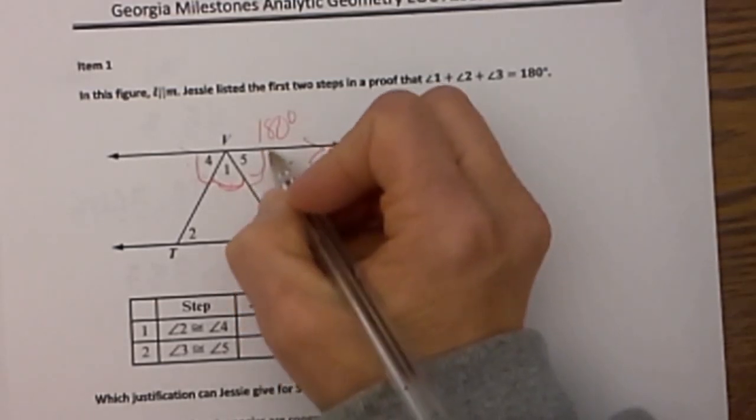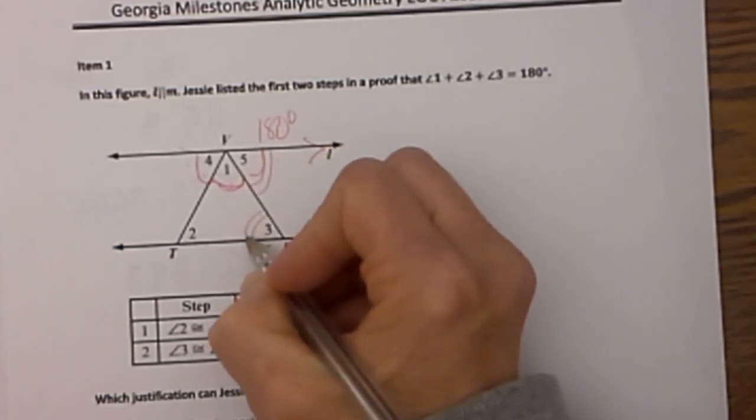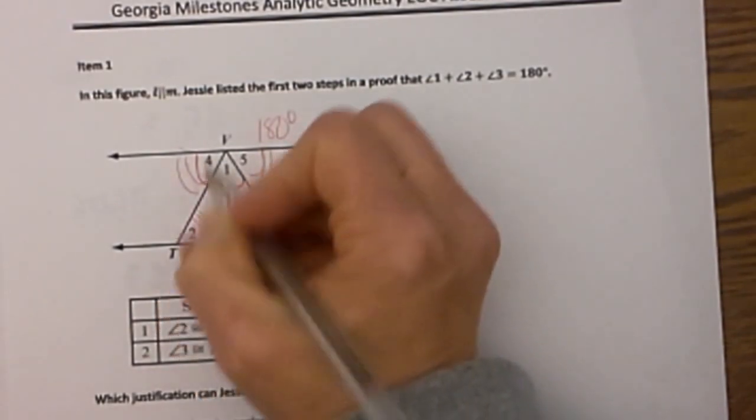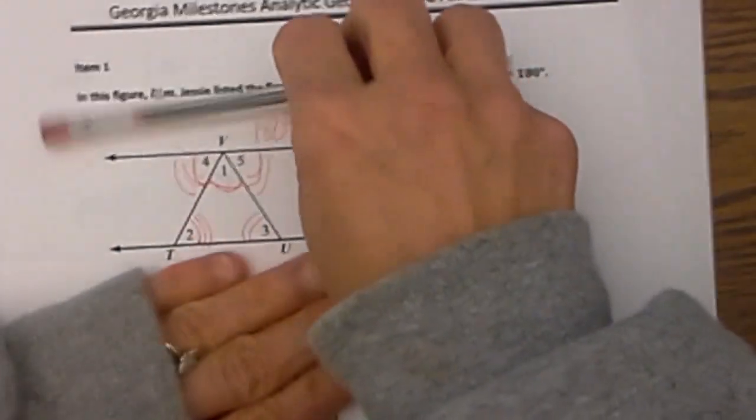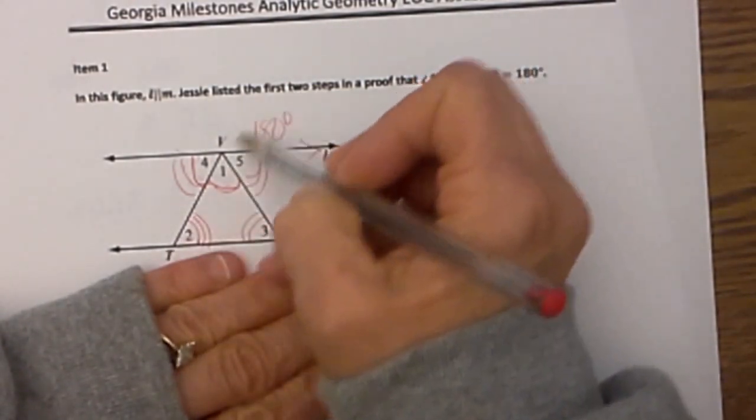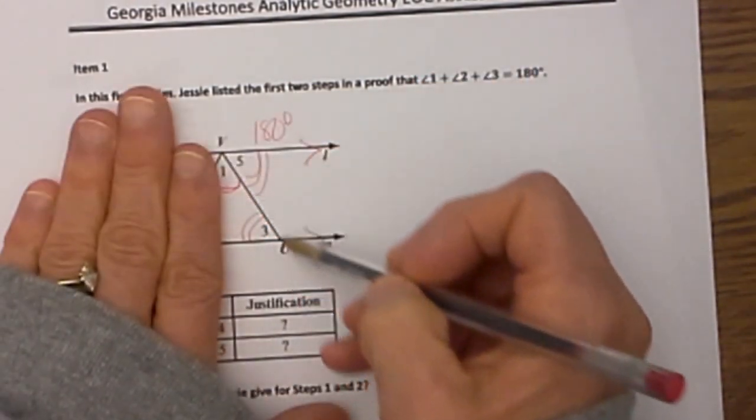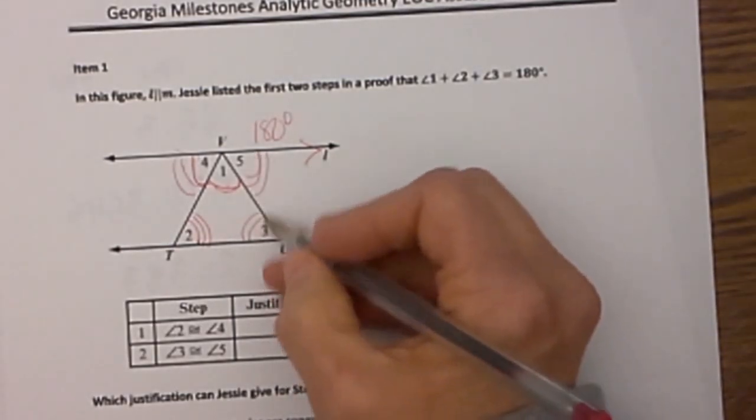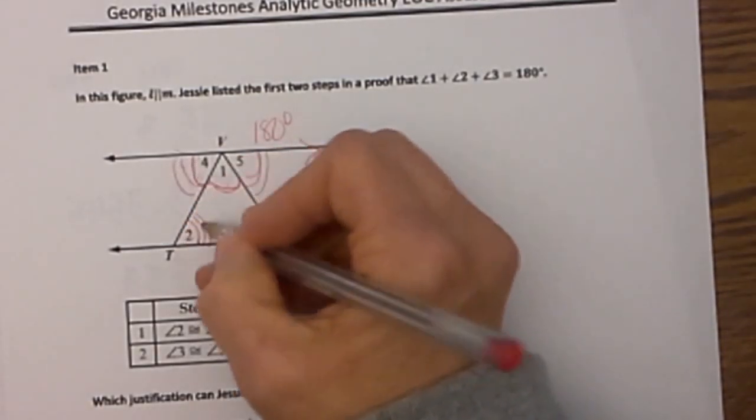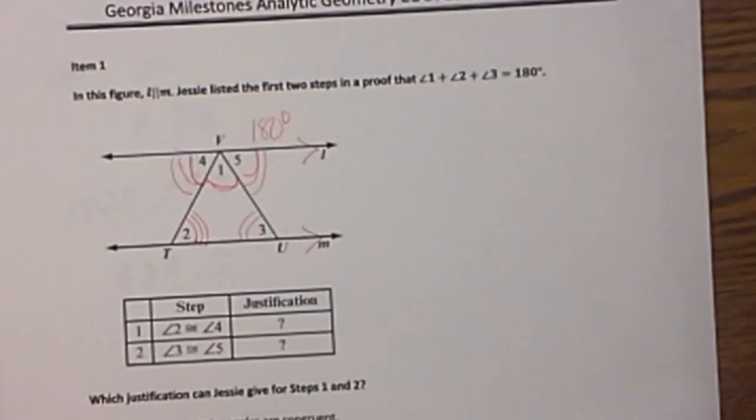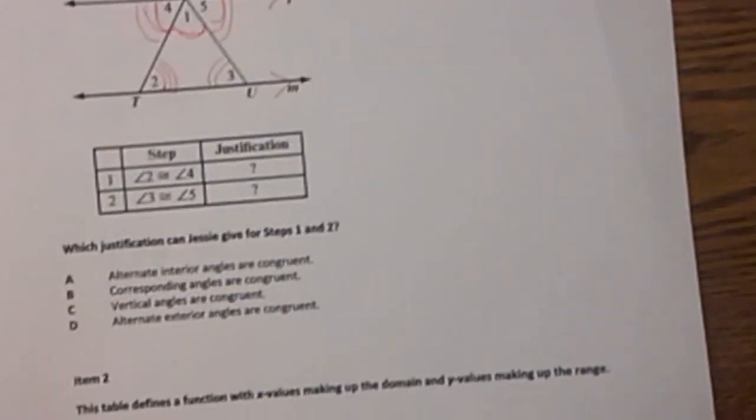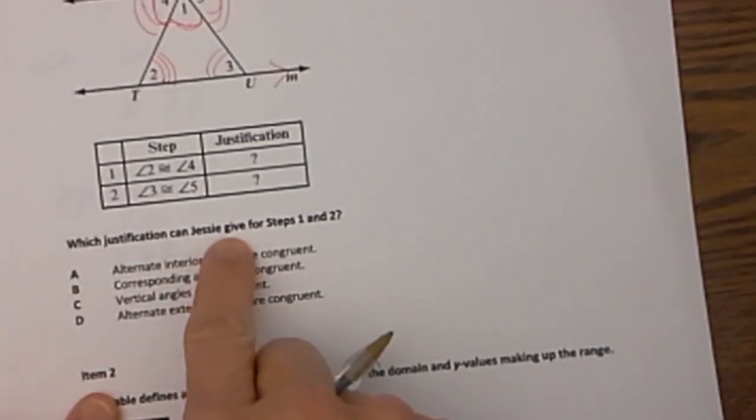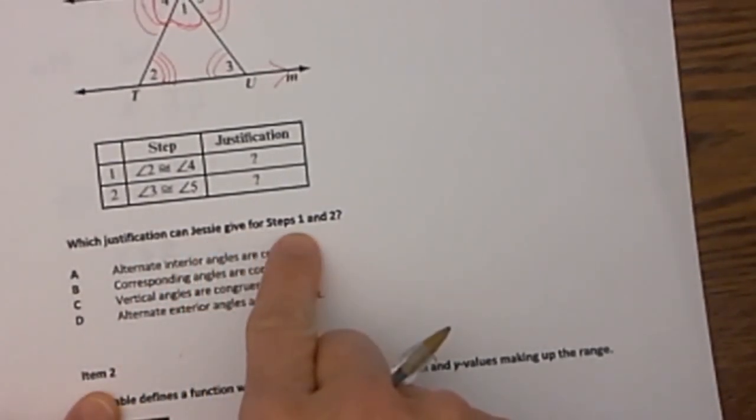Now how do we know that angle 5 and angle 3 and angle 2 and angle 4 are congruent? Well, if you look, the side VT and the side VU create transversals and these become alternate interior angles. Let's go down and look at our possible choices. Which justification can Jesse use to give for steps 1 and 2?